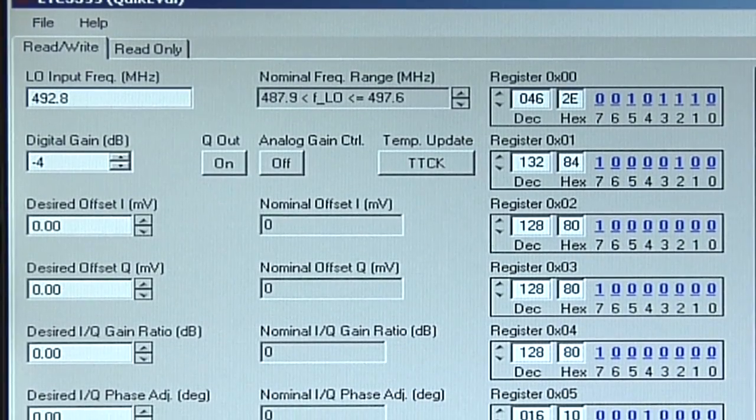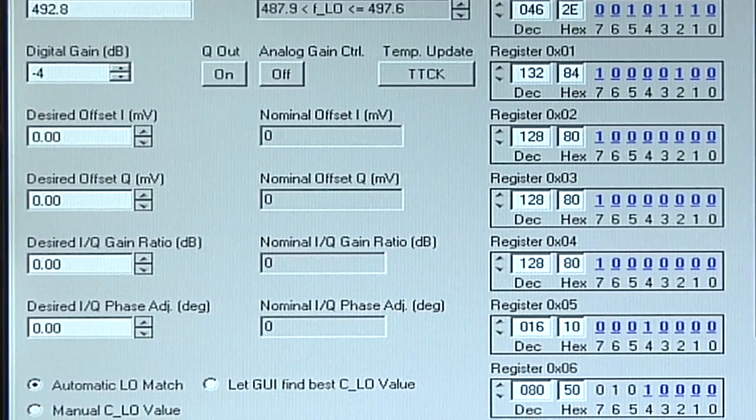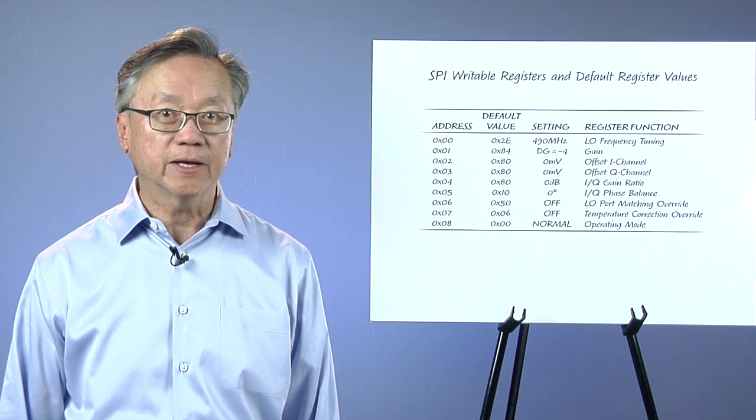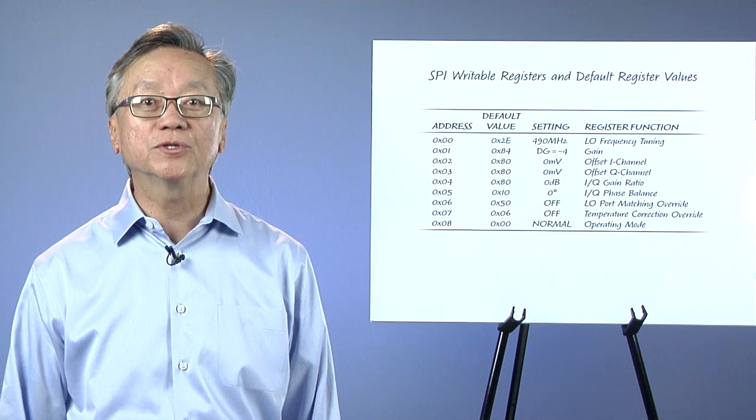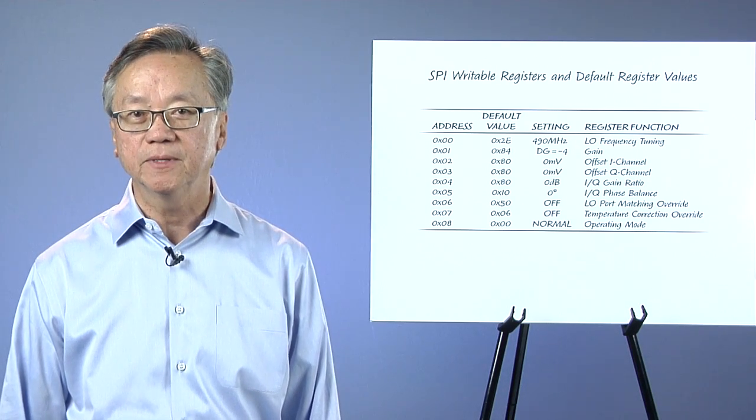You can talk to any of the on-chip registers by typing the desired codes into the appropriate registers. Before we adjust the sideband and carrier suppression, you should first set the modulator to the intended operating frequency and set the gain.